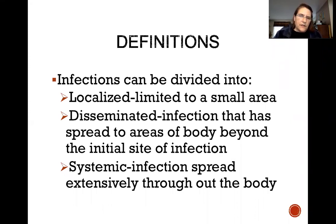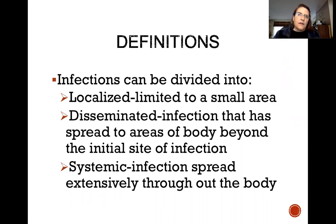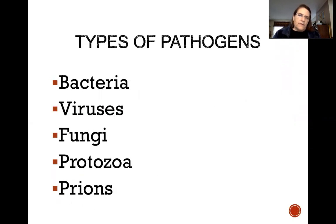Infection can be divided into a couple of different areas. We have localized infection, which is limited to a small area. We have disseminated infection that has spread to areas of the body beyond the initial site of infection. And we have systemic infection, which has spread extensively throughout the body.